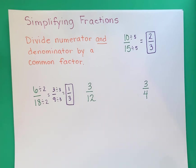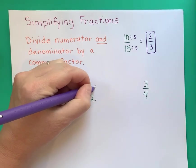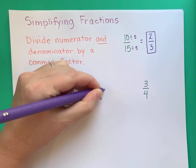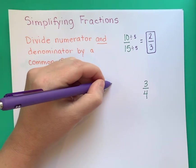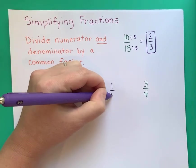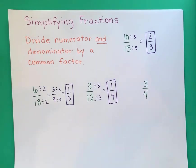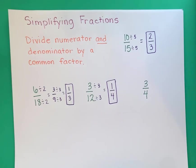Another example: 3 over 12. The only thing I can divide 3 by is 3, and I can divide 12 by 3, so that works. 3 divided by 3 gives me 1, and 12 divided by 3 gives me 4. These are just equivalent fractions, but we're dividing them as far down as we can so they're in their simplest form.